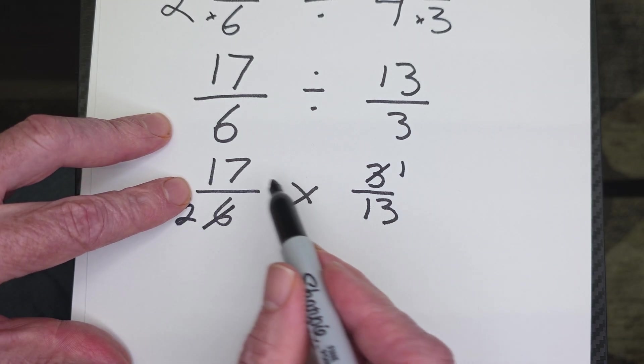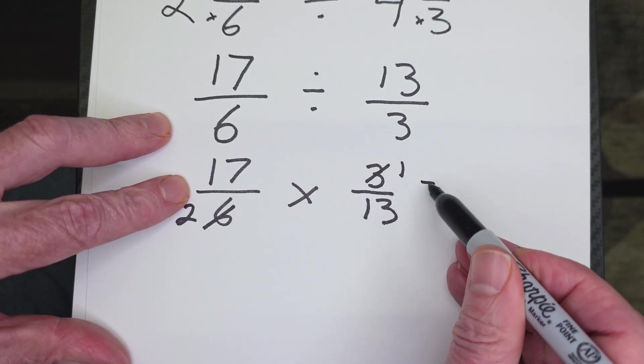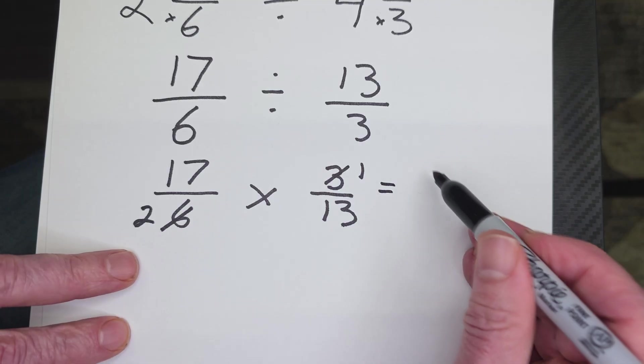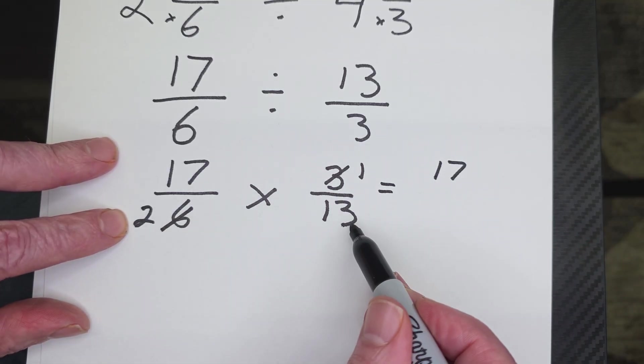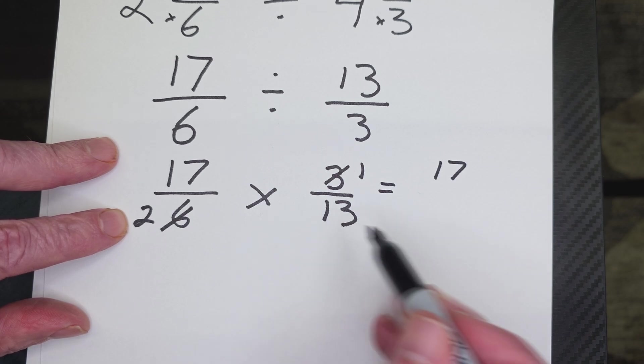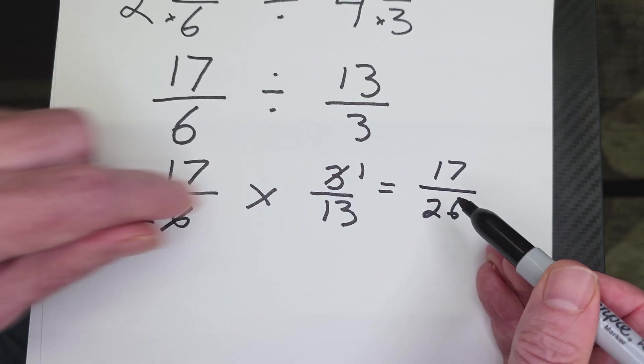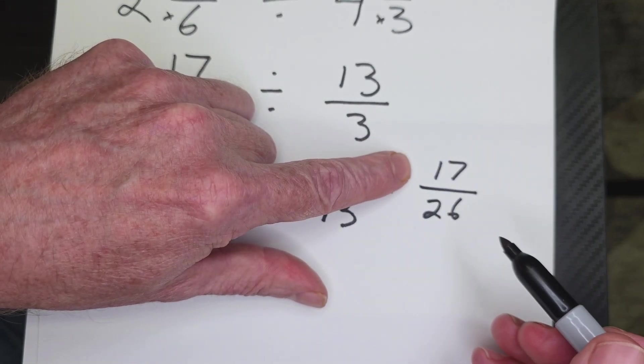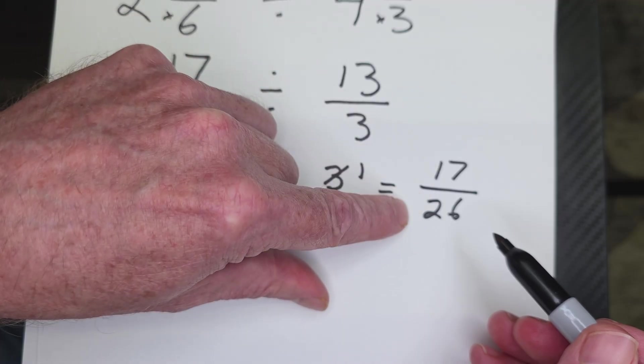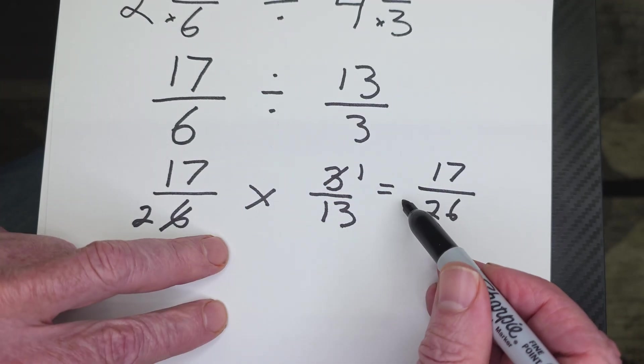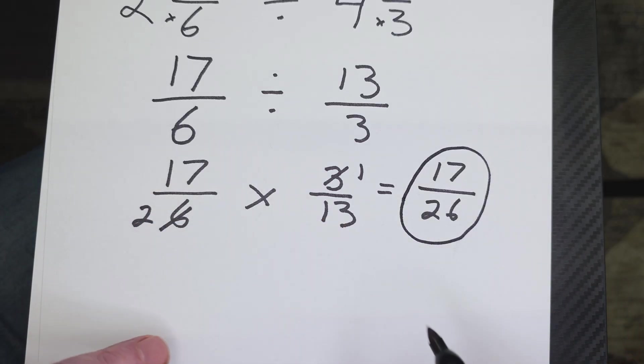And now I'm going to go ahead and just multiply 17 times 1, which would be, let's move this paper over here, 17. And then 2 times 13, you just double 13, and that would be 26. All right, and now this is a proper fraction. It's not an improper fraction. The number on the top is smaller than the number on the bottom. So this is good to go, and just circle that so your teacher can see your answer.